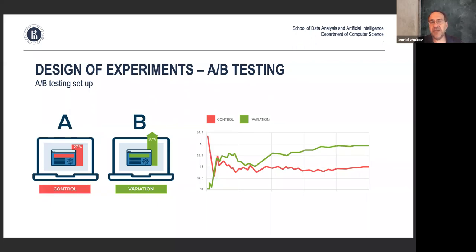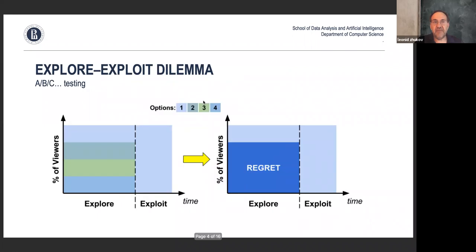A/B testing is really splitting customers into two groups — or splitting requests into two groups — and using one as a control and the other as a variation. That could be pretty much it, but unfortunately the A/B testing approach has its drawbacks, especially if you run a lot of those tests.